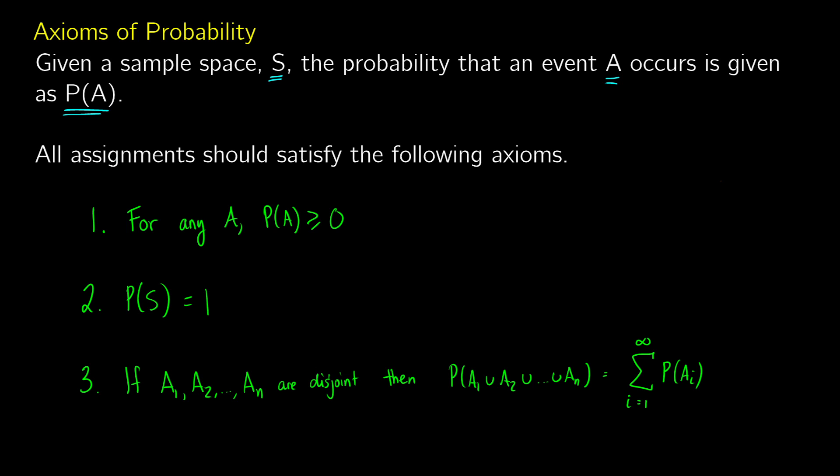The first axiom says that for any A, the probability of A occurring is greater than or equal to zero. In other words, if something never happens it could be zero; if it happens 50% of the time it would be 0.5; and if it always happens, it would be one.